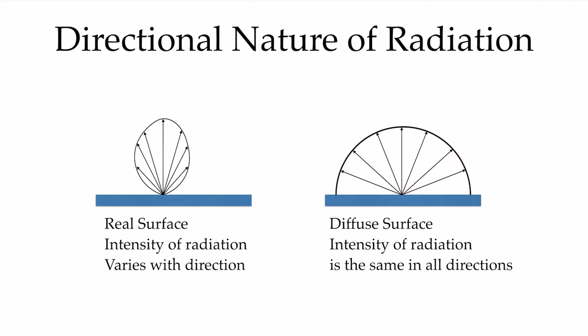Different surfaces behave differently: you get a very specular reflection from a mirror, where the angle of incidence equals the angle of reflection, whereas a very rough surface gives a much more diffuse behavior. In this course, we're going to assume that all surfaces are diffuse — that emission is the same in every single direction.